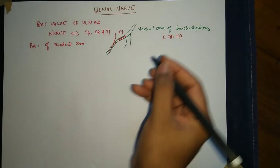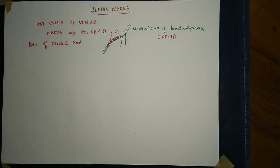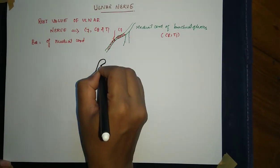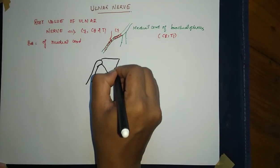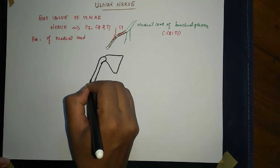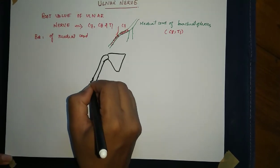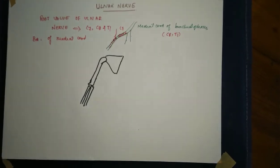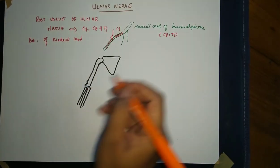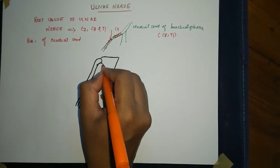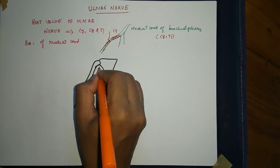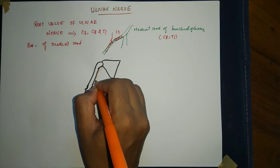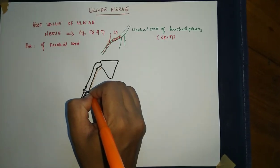Now we look at the course of the ulnar nerve and its supply. The ulnar nerve, arising as a branch of the medial chord of the brachial plexus, passes through the medial compartment of the arm and passes behind the medial condyle of the humerus.